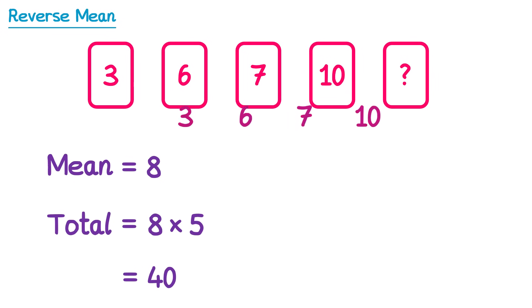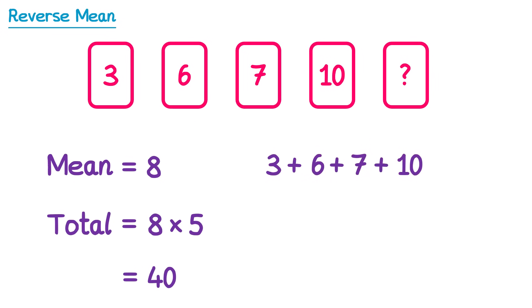If we add up the four numbers that we do have already — 3 plus 6 plus 7 plus 10 — we end up with 26. So if these four numbers make 26 but there's one number missing, we can work that out by subtracting 26 from the known total, which is 40. So if we do 40 subtract 26, we get 14, which was the missing number.